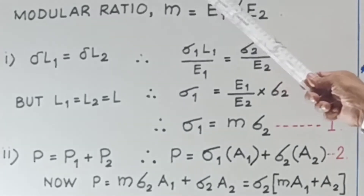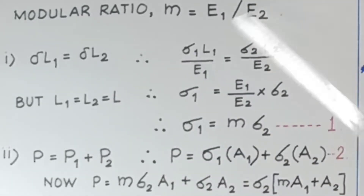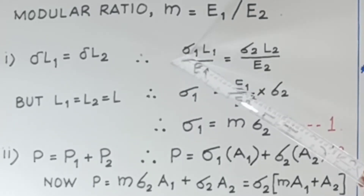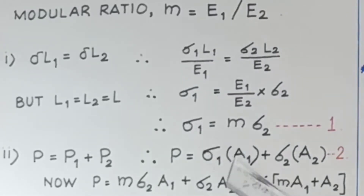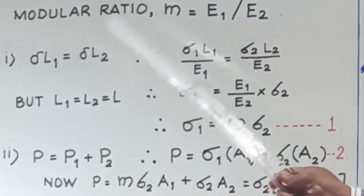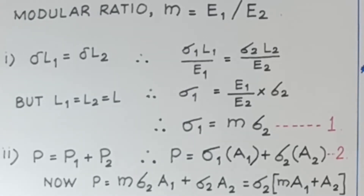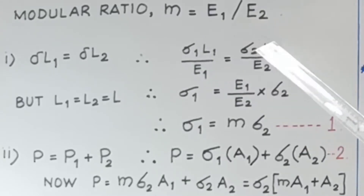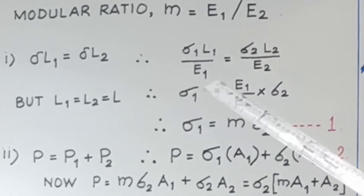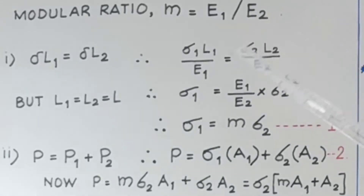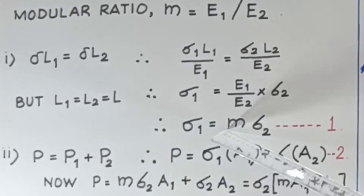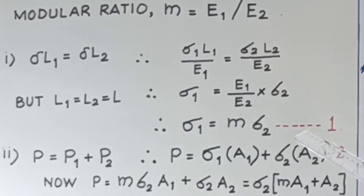In this case L1 and L2 are the same, so they cancel. We can then say that sigma 1 upon E1 equals sigma 2 upon E2 — that is, the strain in material one equals the strain in material two. Note that equal strains follow from equal deformations only when the lengths of the two materials are equal. After cancelling L, sigma 1 equals E1 upon E2 times sigma 2, which is M times sigma 2. This is the first expression.